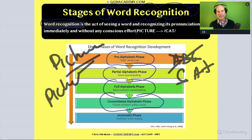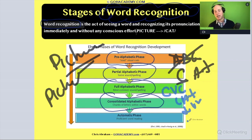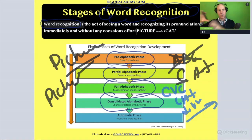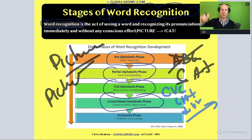Fully alphabetic — now they're using the alphabetical principle. They take a CVC word like 'cat' and match up the letters with sounds to decode it. So we see that basic phonics, letter-sound correspondence, and we start to see basic encoding — more inventive spelling, where they're matching up what they hear with predictable phonetic patterns.